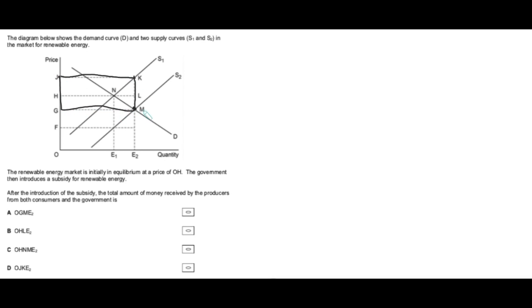So that box there K, M, J and G is the total cost to the government of the subsidy and that money is going to producers, right? But then also, so we just write that down here, so J, K, G and M. So that's the cost to the government.